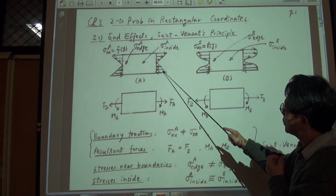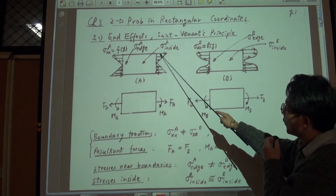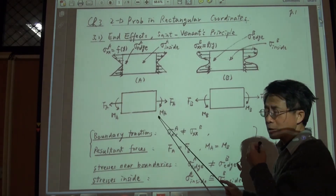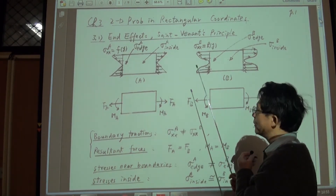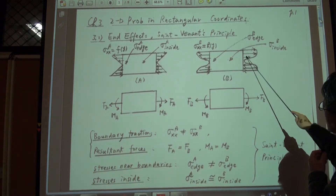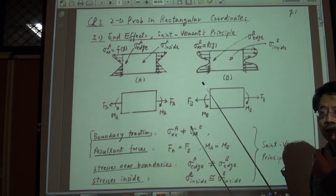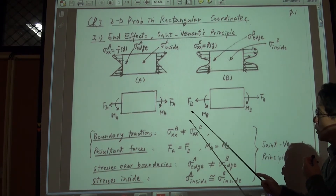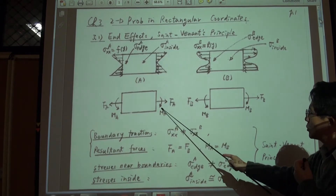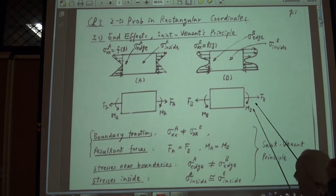The resultant force of these two sets of external forces may be equal. If we compute the resultant force of this distributed load we get FA and MA, representing the resultant force and resultant moment. And here we compute the resultant force and resultant moment of this other distributed load to get FB and MB. There is a possibility that the resultant forces and resultant moments of the two plates are equal: FA = FB and MA = MB.